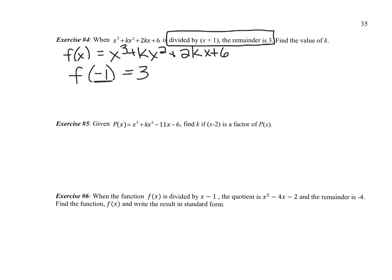Now, this gives me enough information to start to solve this problem. It tells me that if I plug in a negative 1 for the x's, so negative 1 cubed plus k times negative 1 squared plus 2k times negative 1 plus 6, this function equals 3. Now, we have a pretty simple equation to solve. It's going to end up just being a linear equation.